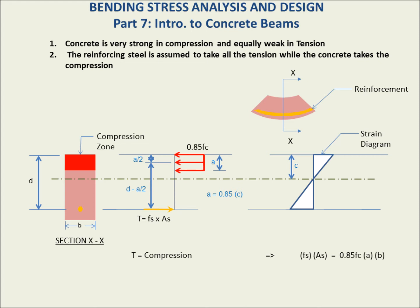The moment that this cross-section is experiencing equals the tension or the compression multiplied by the lever arm between the two. The centroid of the compressive stress distribution is located at half of A from the top of the concrete. So the lever arm between the center of tension and the center of compression is D minus A over two. Therefore, the moment equals Fs·As times (D − A/2), or equivalently, the compression times (D − A/2).